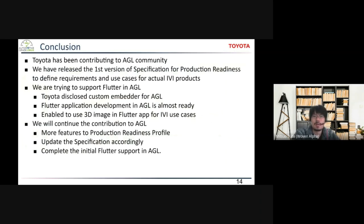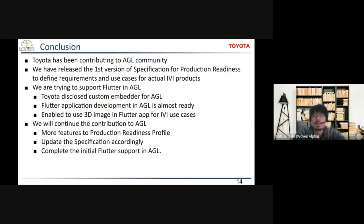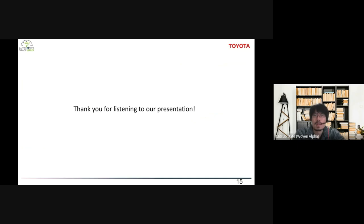To summarize our presentation: Toyota has been contributing to the AGL community. We have released the first version of the specification for production readiness this year, which defines requirements and use cases for actual IVI products. We are also supporting Flutter in AGL — Toyota disclosed the custom embedder for AGL, and Flutter application development in AGL is almost ready. We have enabled the use of 3D images in Flutter apps for IVI use cases. We will continue contributing to AGL: more features to the production readiness profile are planned, we will update the specification accordingly, and we will complete the initial Flutter support in AGL. Thank you for listening.